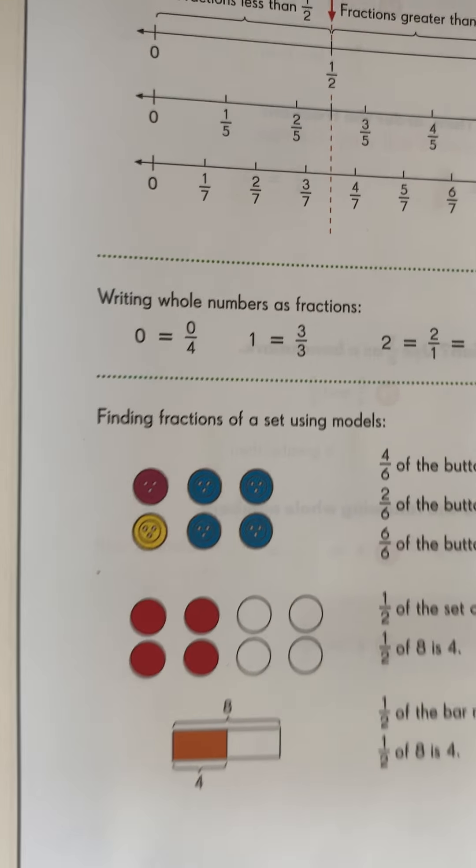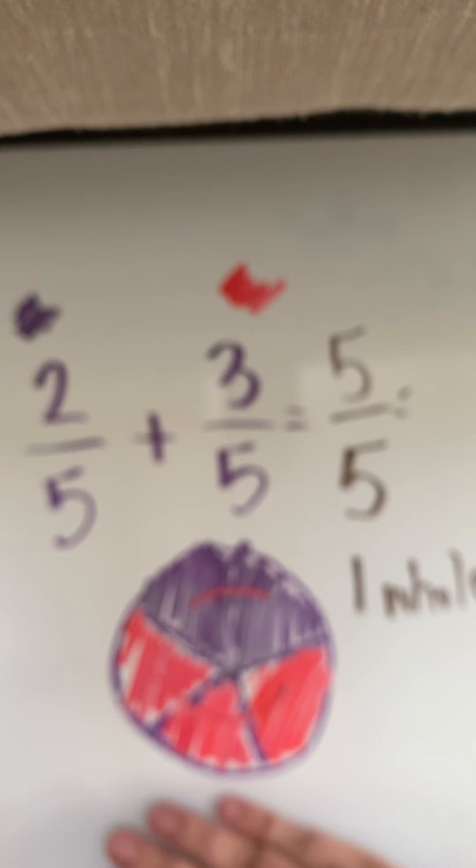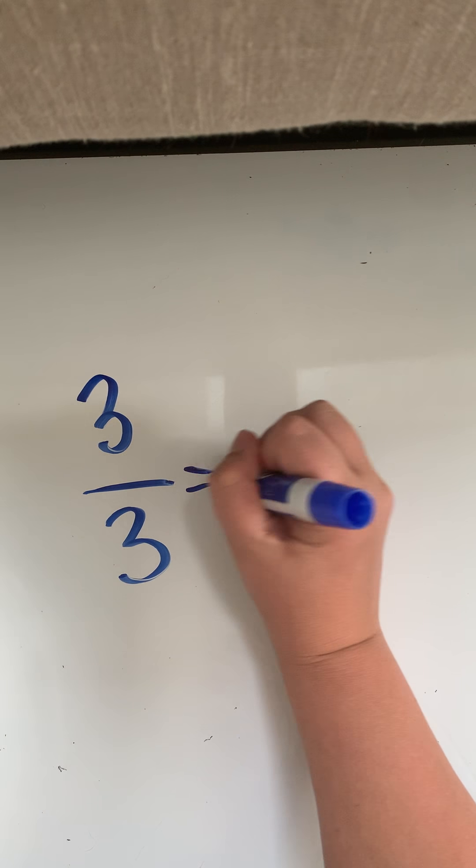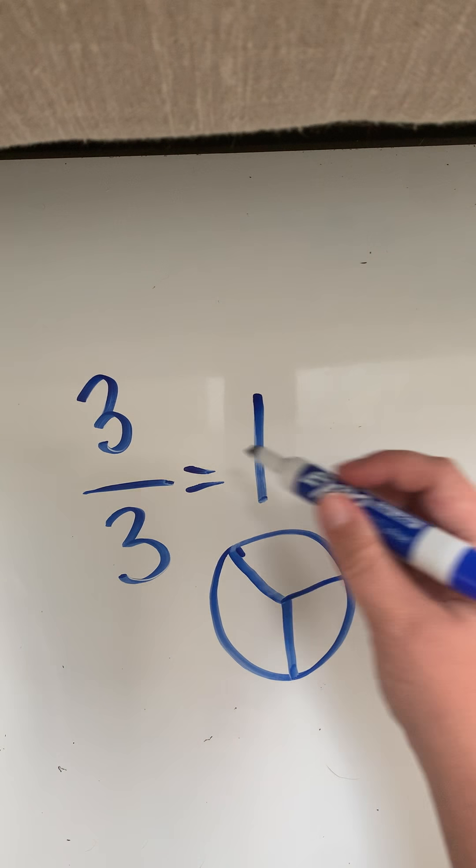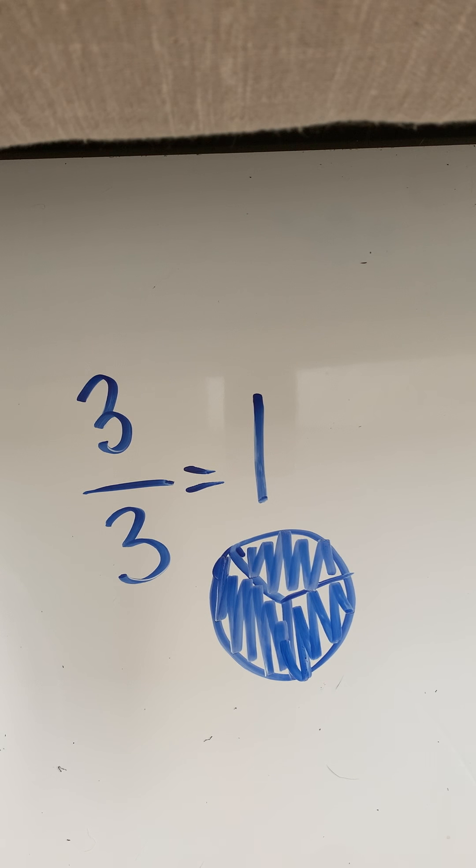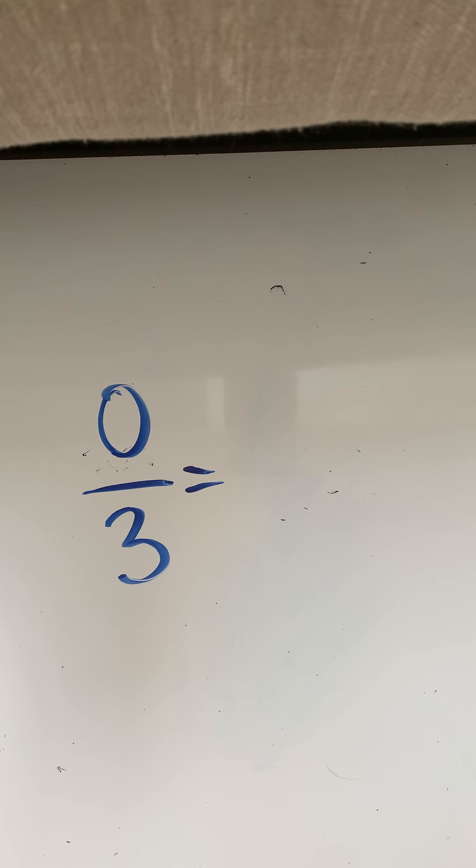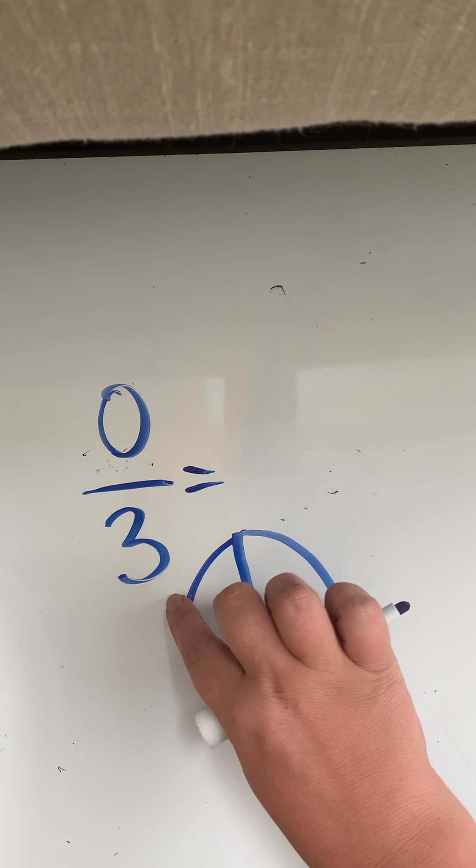Writing whole numbers as fractions. I do want you to see this. We have talked a little bit about this. So if I have three and three thirds, that is the same thing as one whole. Because if I have a pie that split up into three equal parts and I shade in three, because that's what my numerator says, I have my whole cookie shaded in. You see that?